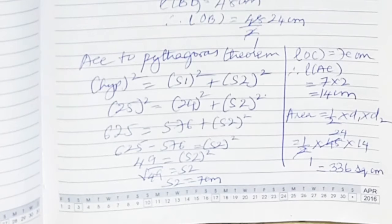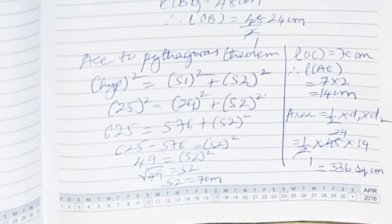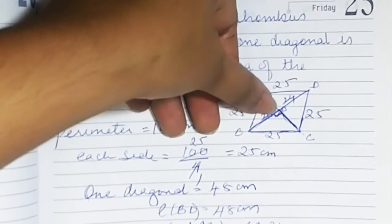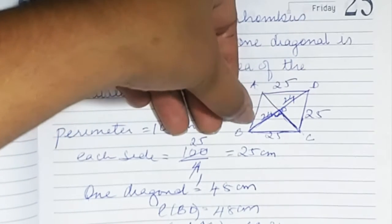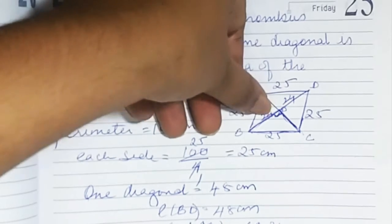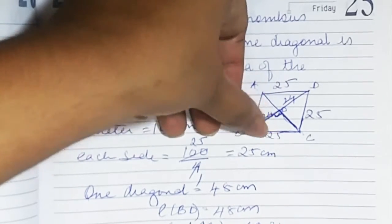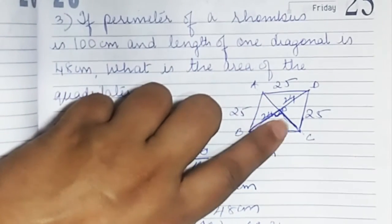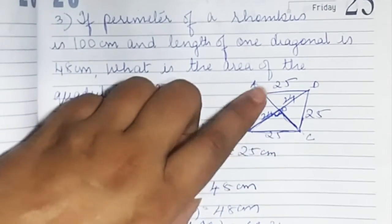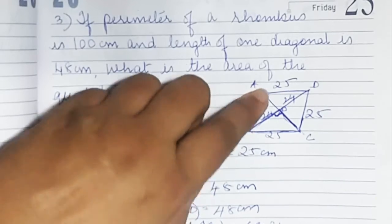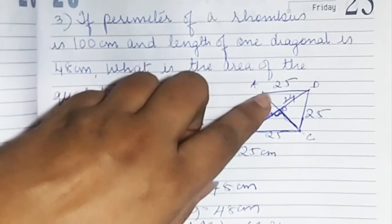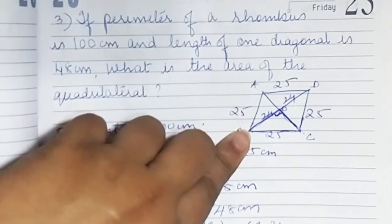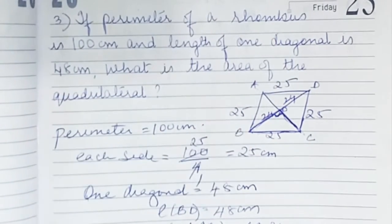To summarise what we did: one side was 25, the whole diagonal was given so we halved it to get 24. Then using 24 and 25 with Pythagoras theorem we found the third side. We doubled that third side to get the second diagonal. Then using half into d1 into d2, we got the area of the rhombus.